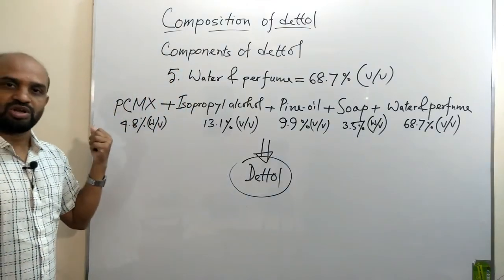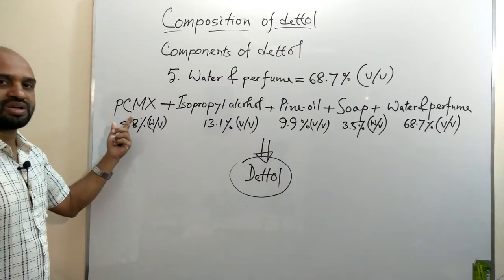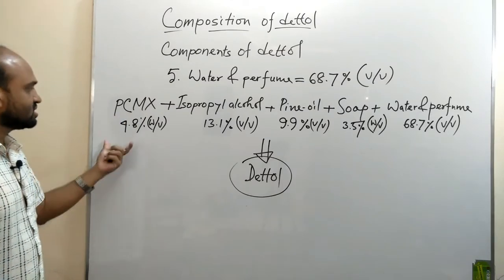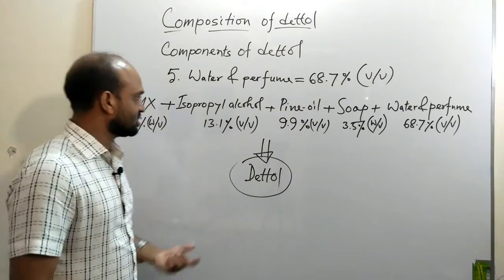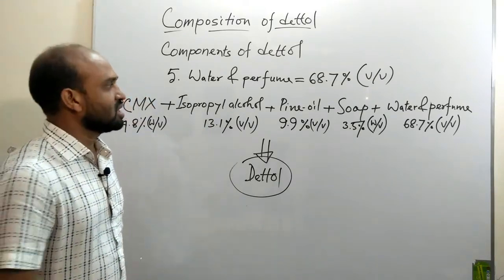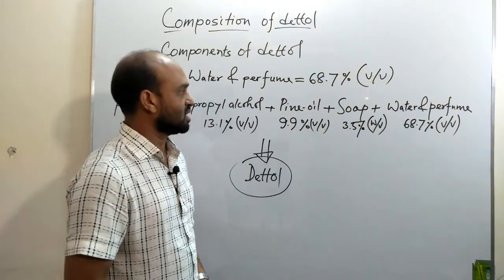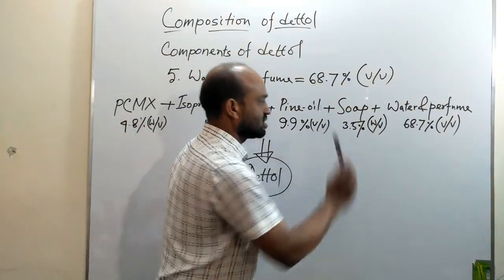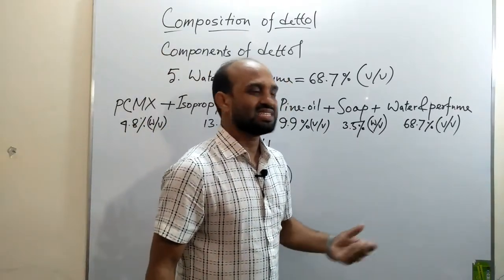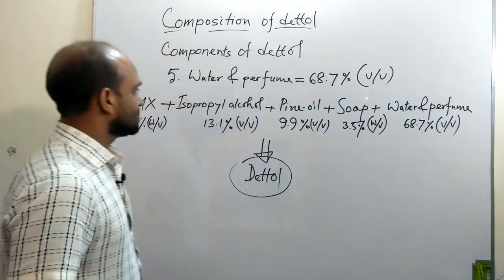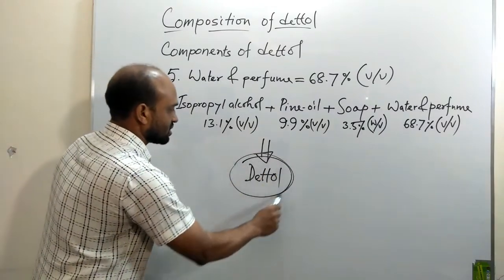The main component of Dettol is parachlorometaxylenol, taken at 4.8%. Isopropyl alcohol is taken at 13.1%. Pine oil is taken at 9.9%. Soap is taken at 3.5%. Water and perfume is taken at 68.7%. This is the composition of Dettol at a glance.